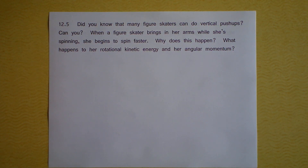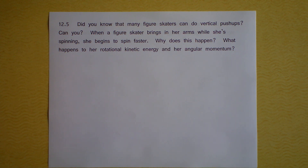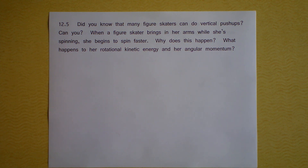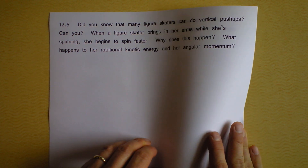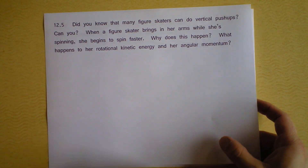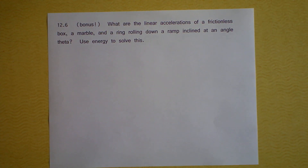Question five is about figure skaters. They can do vertical push-ups — stand on their head and do push-ups lifting their entire body straight up and back down without cracking their head. So this figure skater is spinning around and she's bringing her super strong arms in while spinning, and she spins faster. I want to know why, and I want to know what's happening to her rotational kinetic energy and her angular momentum — and why. You should explain using words.